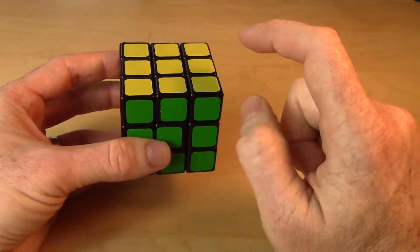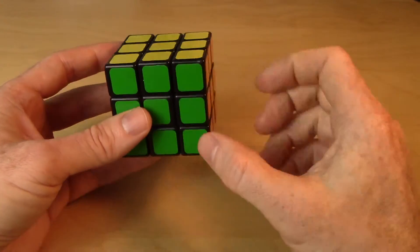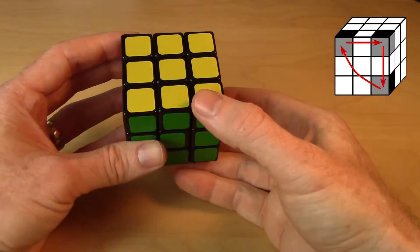Okay, there is another one for cycling the three edges, and I think it's reminiscent of the one we used to cycle the corners.